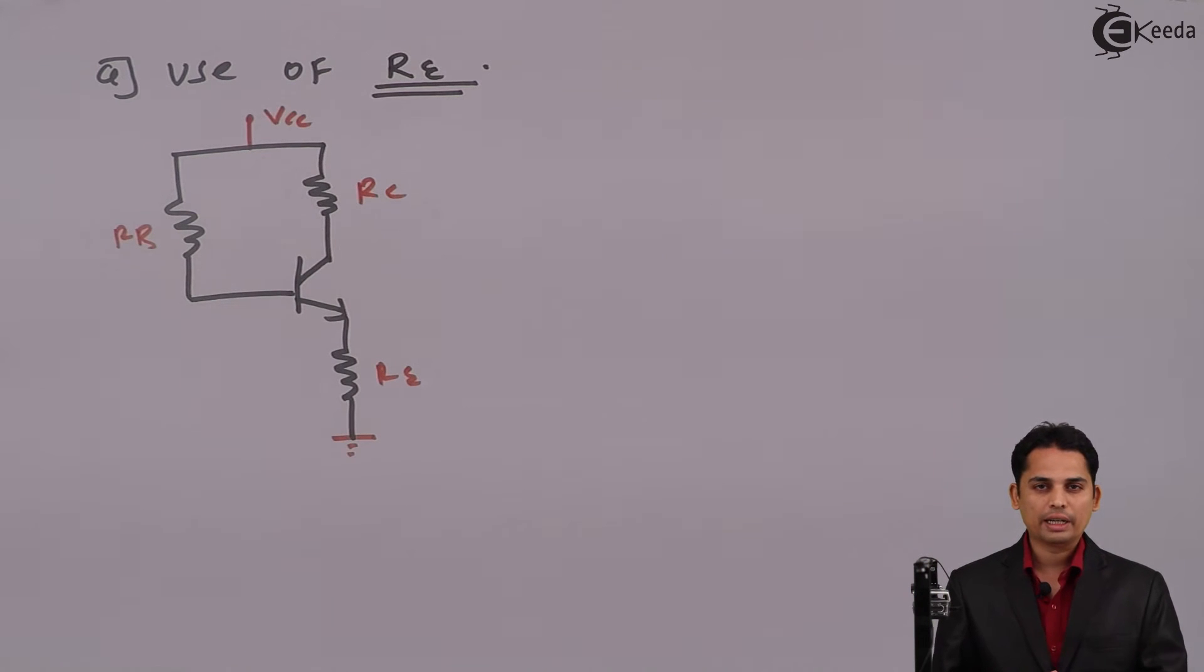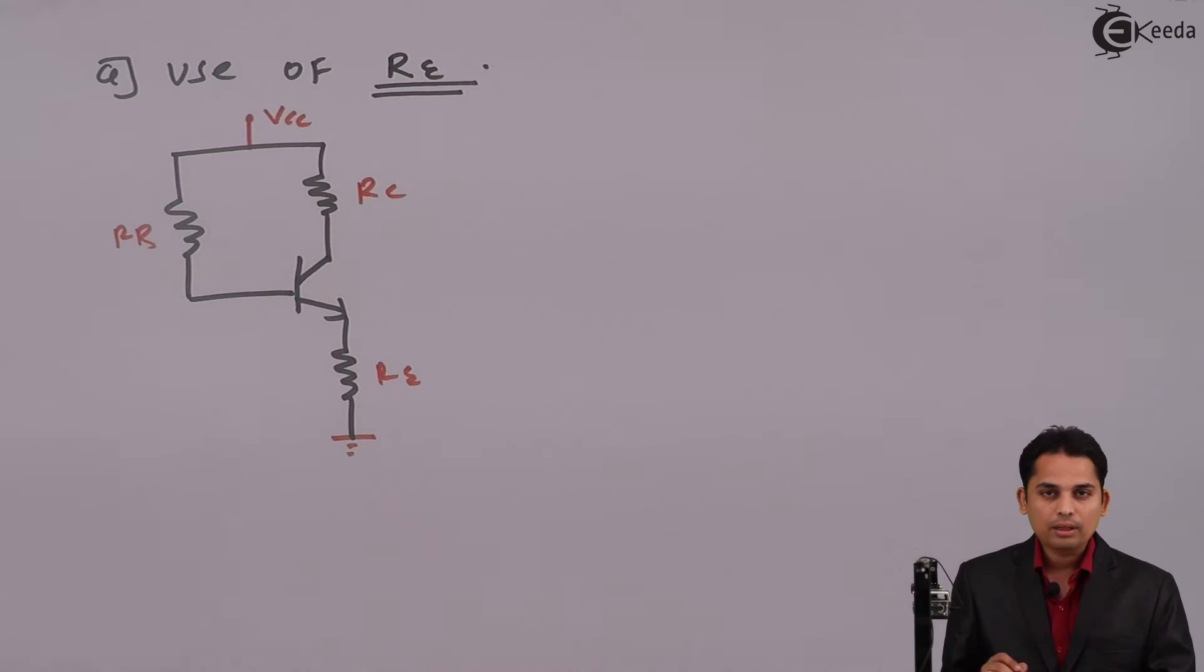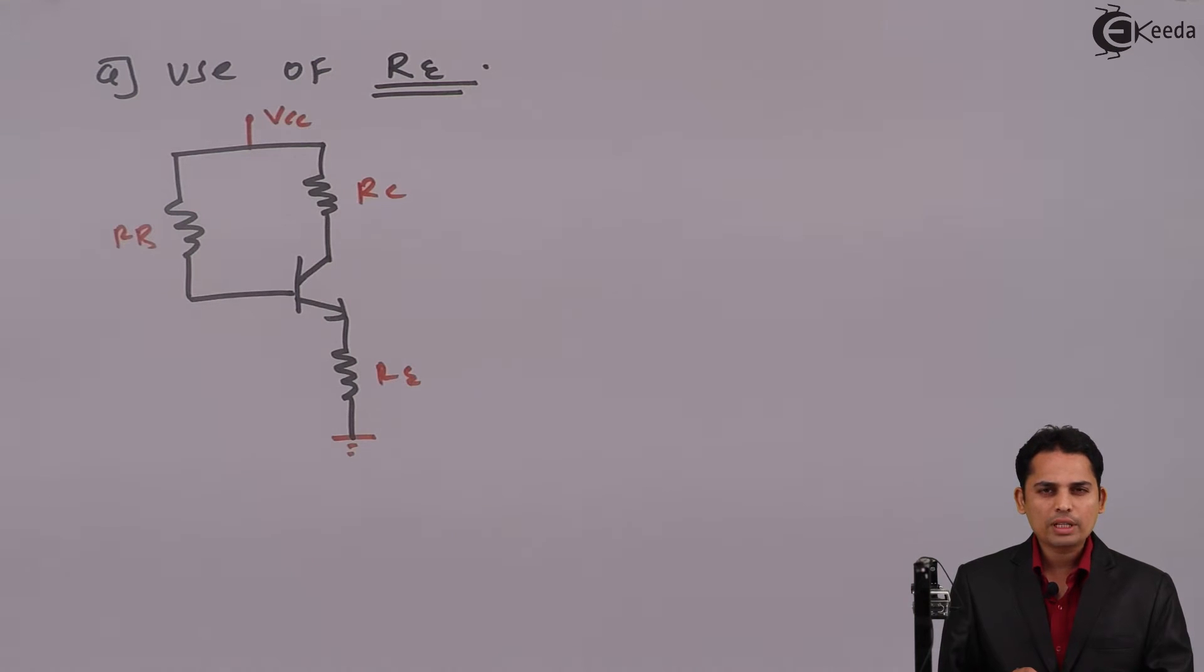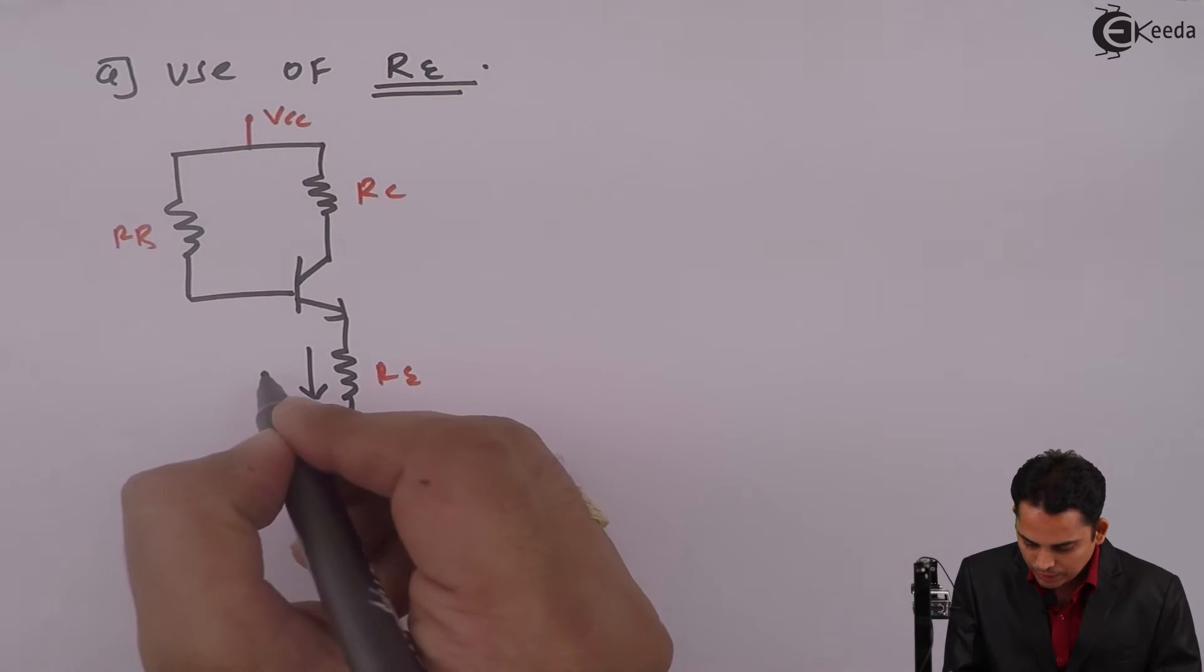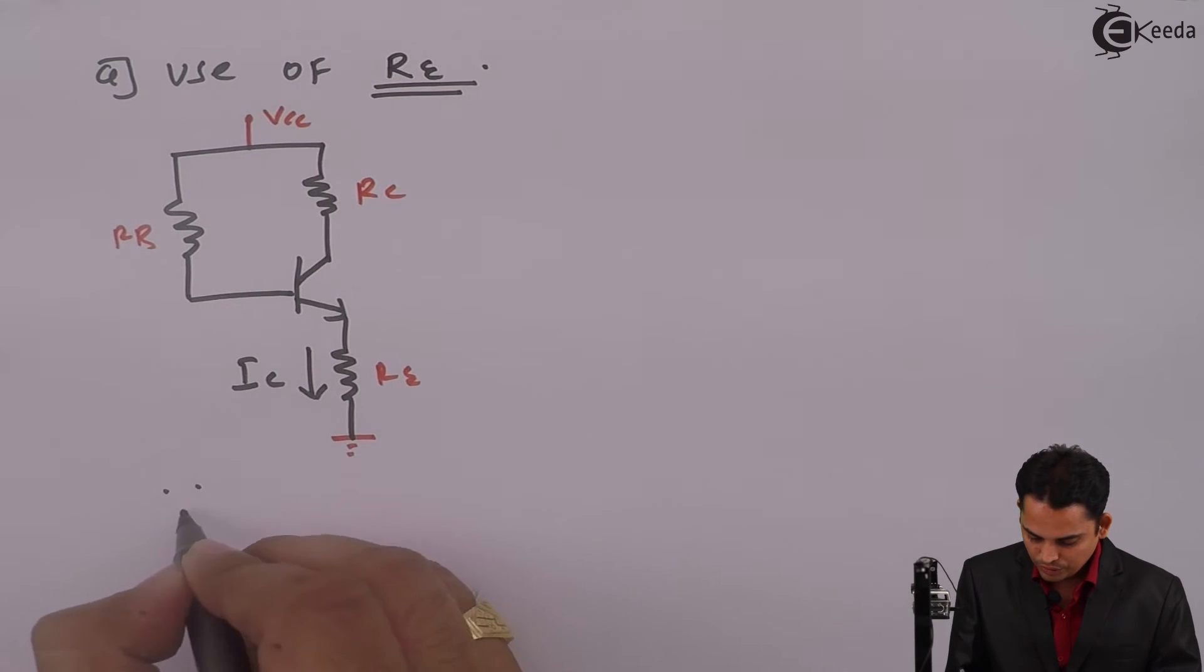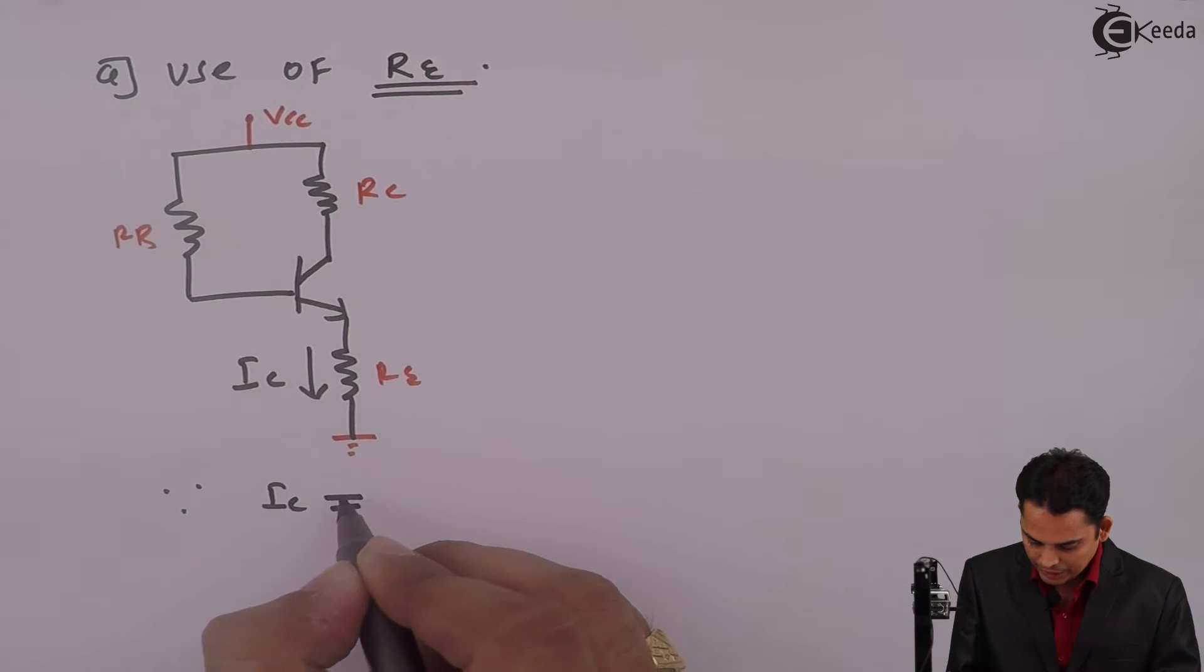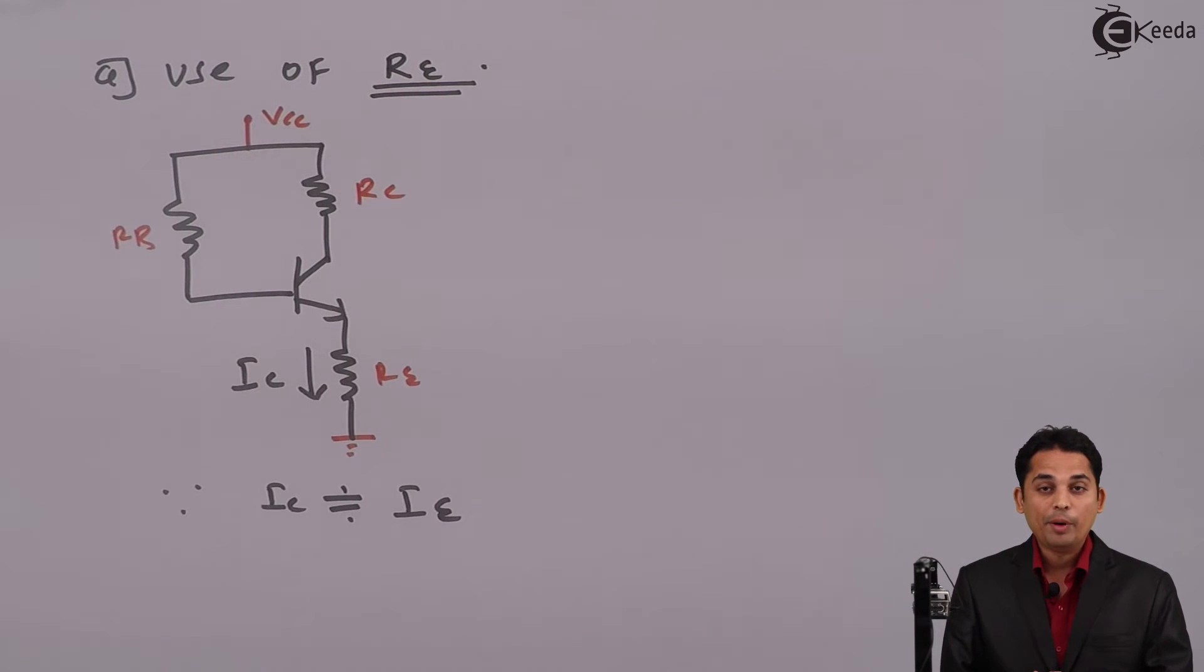As shown in the circuit diagram, we have used RE at the emitter. Now at this emitter, when we are using RE, the current flowing through this is nothing but IC, since IC, that is collector current, is approximately equal to emitter current.